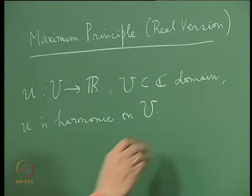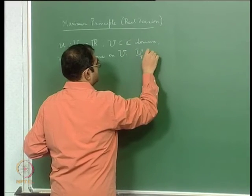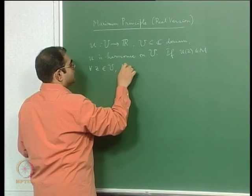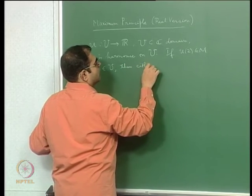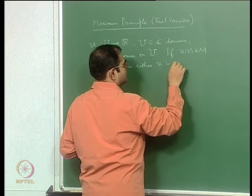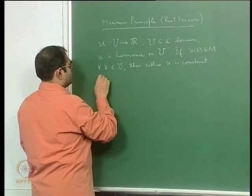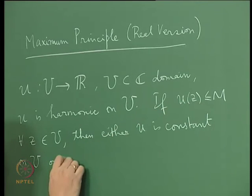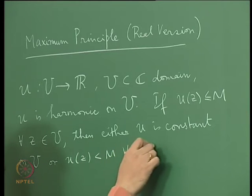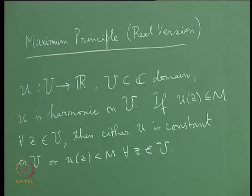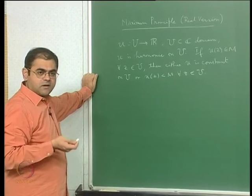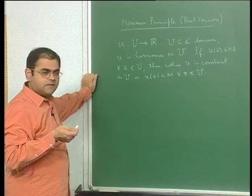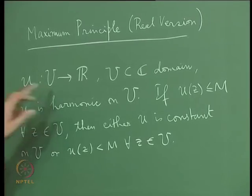Suppose u of z is less than or equal to M for all z in U. Then either u is constant on capital U, or the inequality is strict, meaning u of z is strictly less than M for all z in U. In other words, a non-constant harmonic function can never attain a maximum in an open connected set.